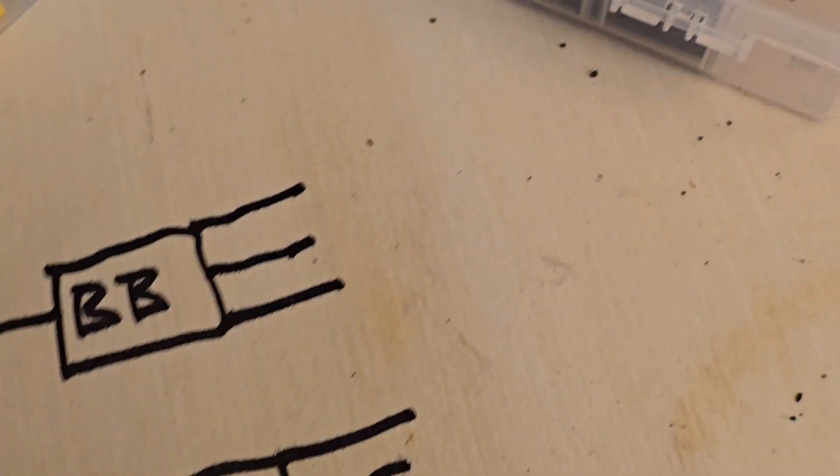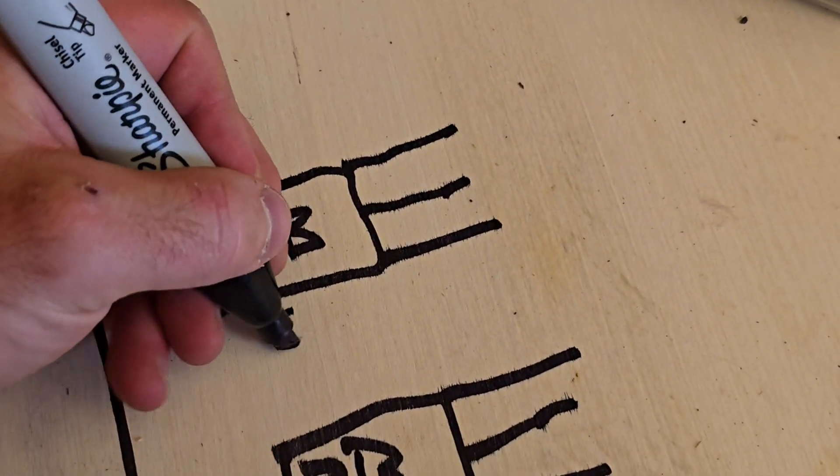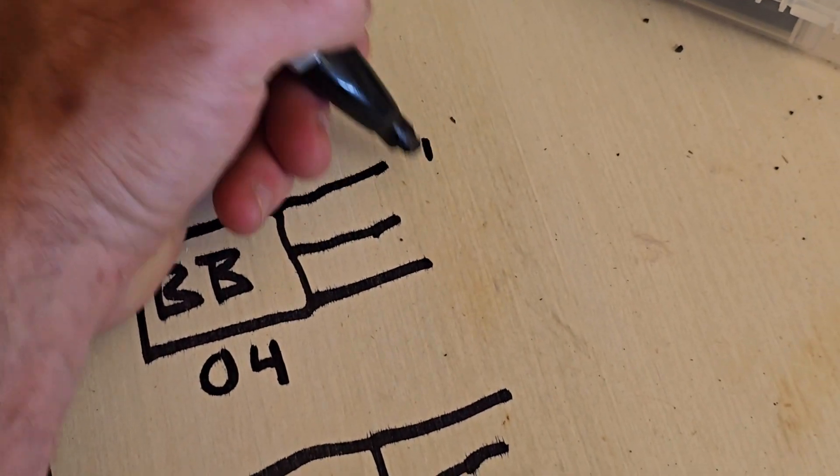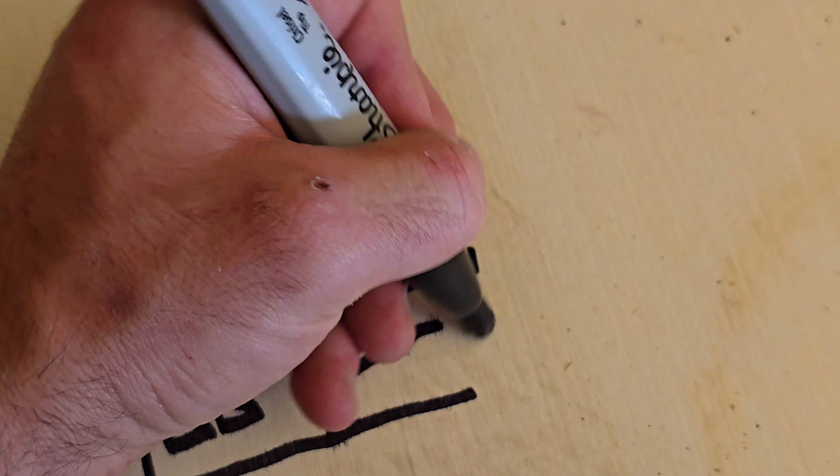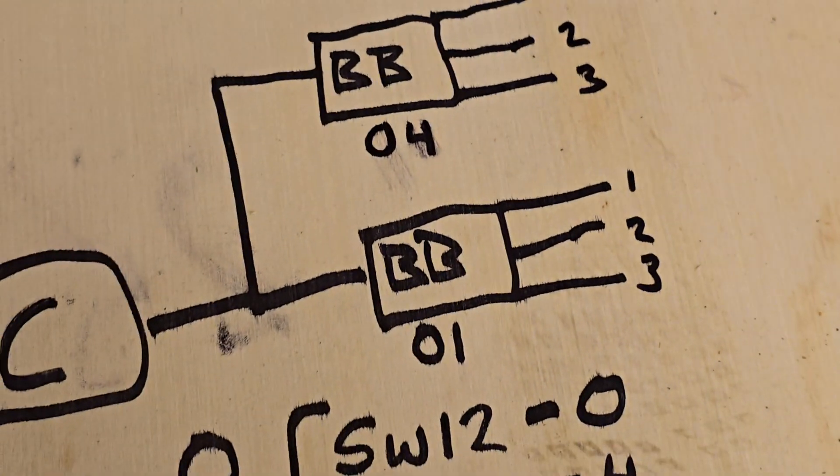So that takes care of the second branch box. This one up here labeled 04 has the DIP switch on for one, two, and three, and the same thing down here – one, two, and three – those are hooked up.